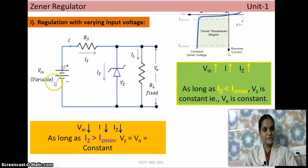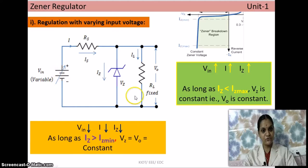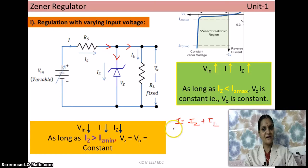Case 1: Regulation with varying input voltage. The input voltage is variable, RS and RL are fixed. When source voltage changes, current IS changes. At the junction node, the current splits: the total current I equals IZ plus IL, by Kirchhoff's Current Law. At any instant this must be satisfied. If the input voltage increases, current I automatically increases, so IZ plus IL must also increase.